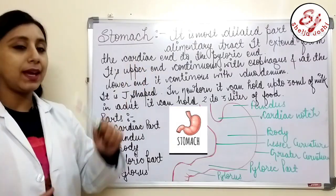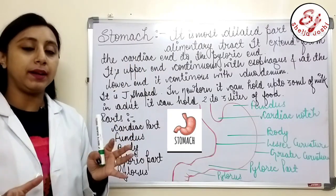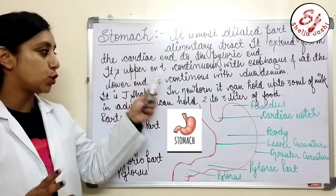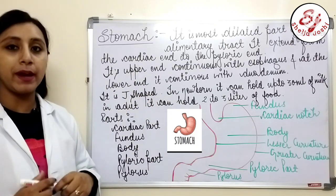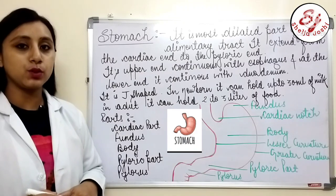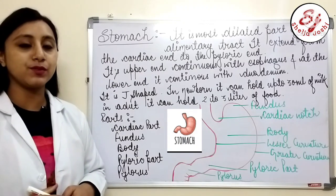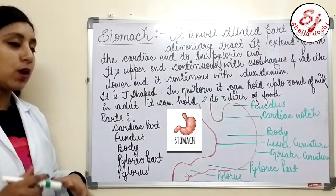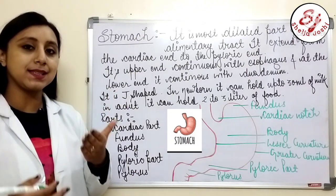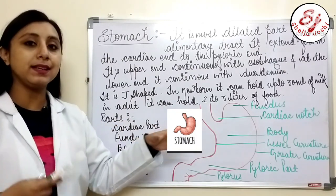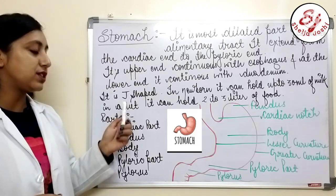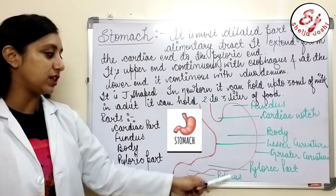The stomach is a very dilated part of the whole digestive system. The cardiac end starts at the top and ends at the pyloric end. The upper end is continuous with the esophagus and the lower end is continuous with the duodenum. After the esophagus ends, the stomach starts, and the last part of the stomach is attached to the duodenum. It is J-shaped, as you can see.